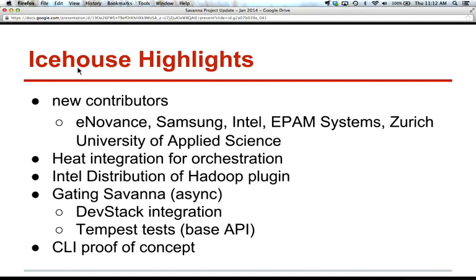We're also looking at a Cloudera distribution plugin — the team has blueprints and initial discussions about making a plugin for Savannah that will install Cloudera. In Icehouse, we have already implemented Heat integration for the orchestration engine in Savannah. We have complete integration with DevStack and are running gating jobs in a synchronous manner, with hopes to make it asynchronous later in Icehouse or early in the next release. We also have a CLI proof of concept included in the latest Savannah client release from several days ago.